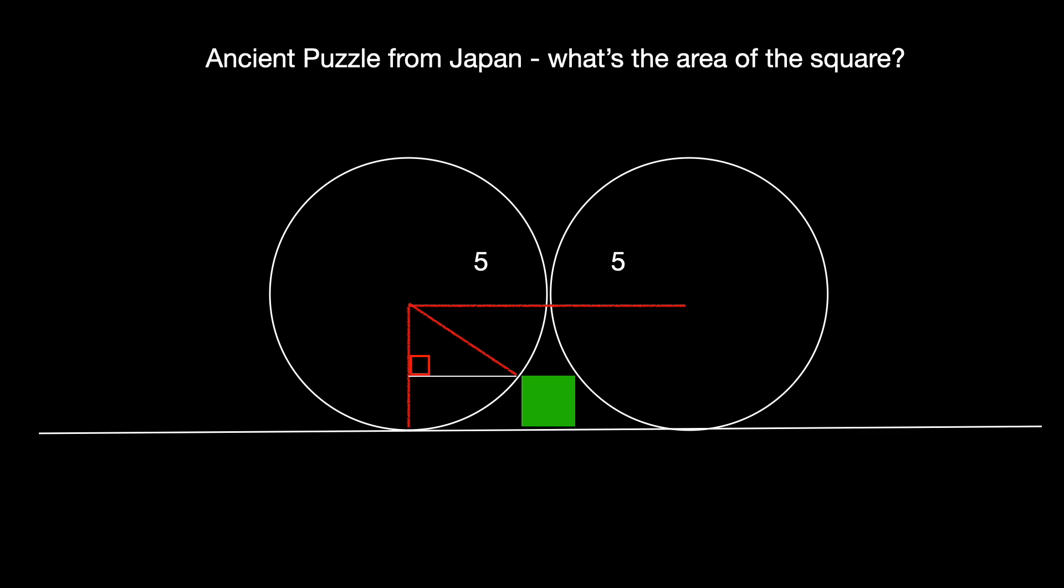Let's find the lengths of the legs of the right triangle. Let's draw this second white line which perpendicularly bisects the top of the square from there to where the two circles intersect.